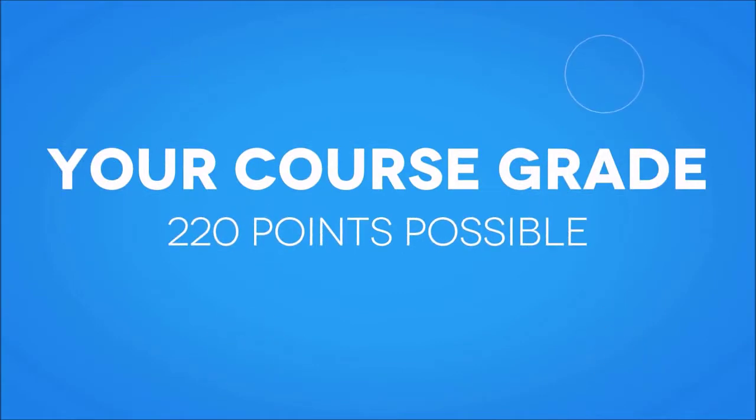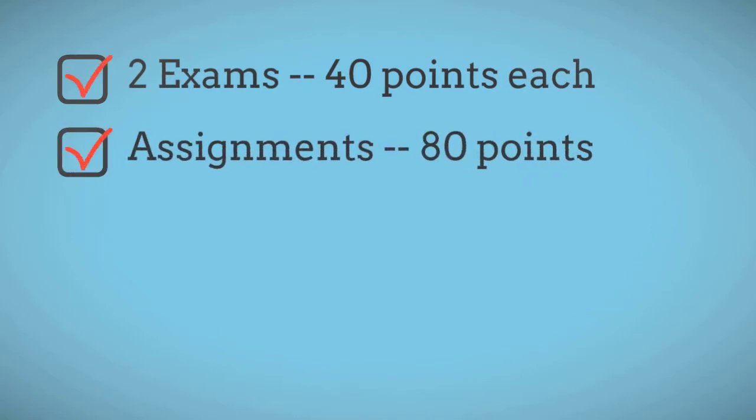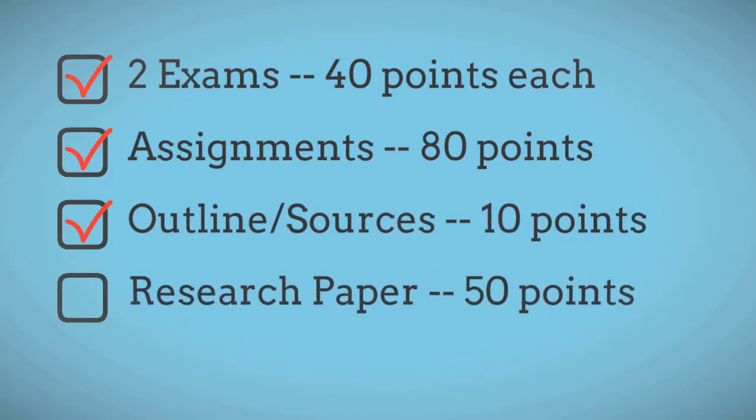There are a total of 220 points possible in the course: two exams worth 40 points each, eight short assignments worth 10 points each, an outline and list of sources worth 10 points, and a research paper worth 50 points.